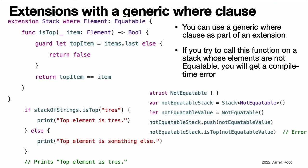Extensions with a generic where clause. You can also use a generic where clause as part of an extension. This example extends the generic stack structure from the previous examples to add an isTop method. The new isTop method first checks that the stack is not empty and then compares the given item against the stack's topmost item. If you tried to do this without a generic where clause, you would have a problem. The implementation of isTop uses the equal equal operator, but the definition of stack does not require its items to be equatable, so using the equal equal operator results in a compile time error. Using a generic where clause lets you add a new requirement to the extension so that the extension adds the isTop method only when the items in the stack are equatable. If you try to call the isTop method on a stack whose elements are not equatable, you will get a compile time error.